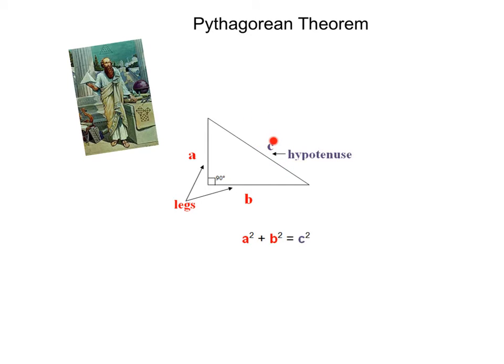Pythagoras discovered something phenomenal, that if you squared A, added it to the square of B, it would equal the hypotenuse or C squared. That's where we get the Pythagorean theorem that you may have heard before. A squared plus B squared equals C squared.